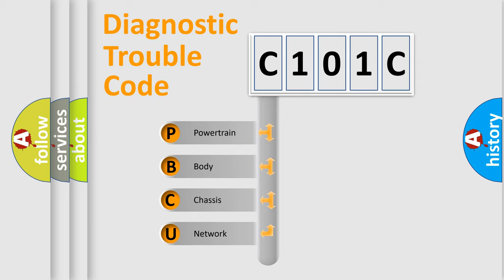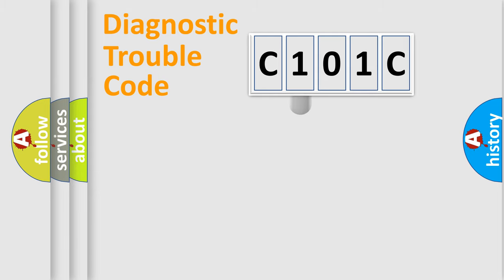We divide the electric system of automobile into four basic units: Powertrain, Body, Chassis, Network. This distribution is defined in the first character code.